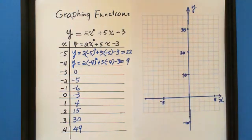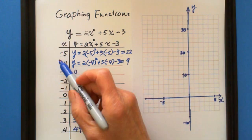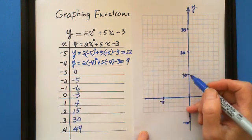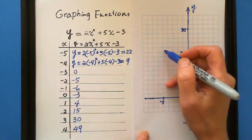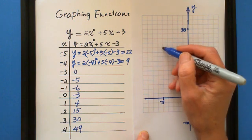We already have this number, which is negative 5 is 22. Negative 5 is 22. This is 10. This is 22. This one is 22 here.